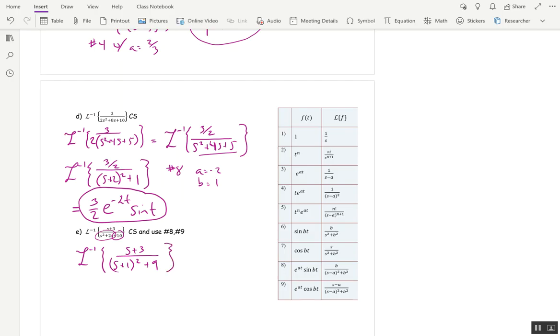Now this is close to number 9 with a equal negative 1, but not quite. Because if you notice in number 9, the term in the denominator, s minus a, has to appear in the numerator. So we'll just make it appear. L inverse of s plus 1 upstairs, so we'll just put an s plus 1 instead of an s plus 3. But we need to keep our expression equivalent to the original. So we have an s plus 1, we want s plus 3, so we're missing two units. So we'll add that on as a separate fraction. Now, if we added those two fractions, we'd be back to an s plus 3 on the top.